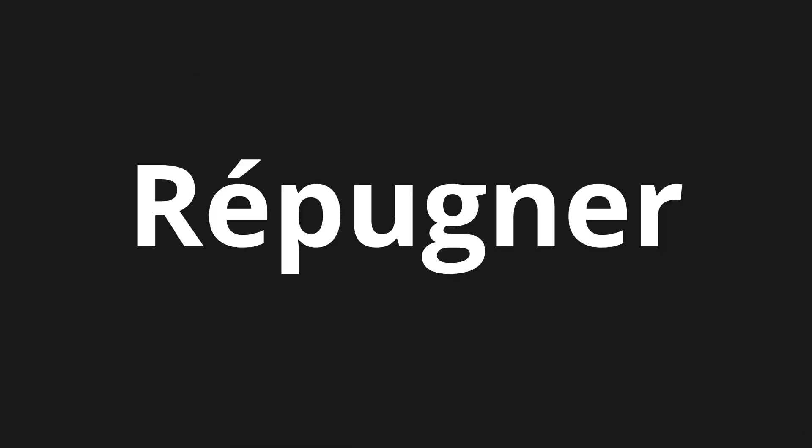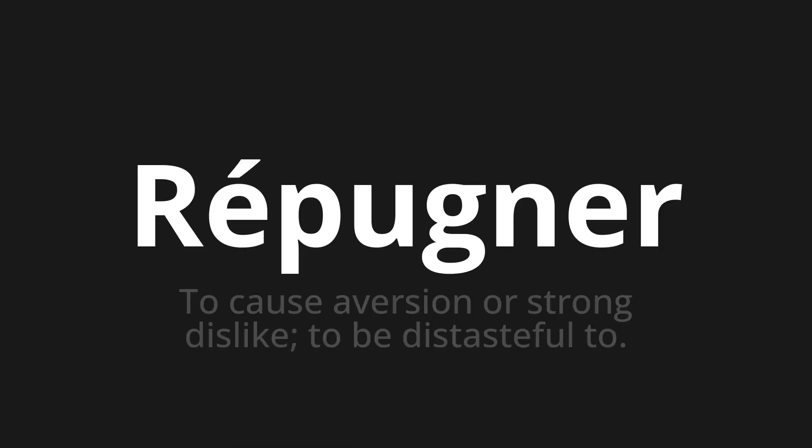Welcome to this pronunciation video. Today we will be focusing on a new word that you might find challenging or entreating. So let's dive into today's word. Repugner, which means to cause aversion or strong dislike, to be distasteful to.